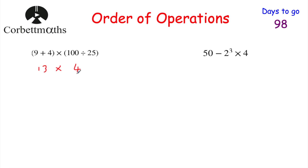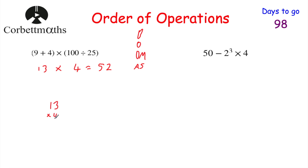Now we've just got 13 multiplied by 4. We've done our brackets, so now we do the multiplication. To multiply by 4, we can double and double again: doubling 13 is 26, and doubling again is 52. So the answer is 52. Alternatively, using column multiplication: 4 times 3 is 12, put 2 down carry 1; 4 times 1 is 4, plus 1 is 5. So again, 52.